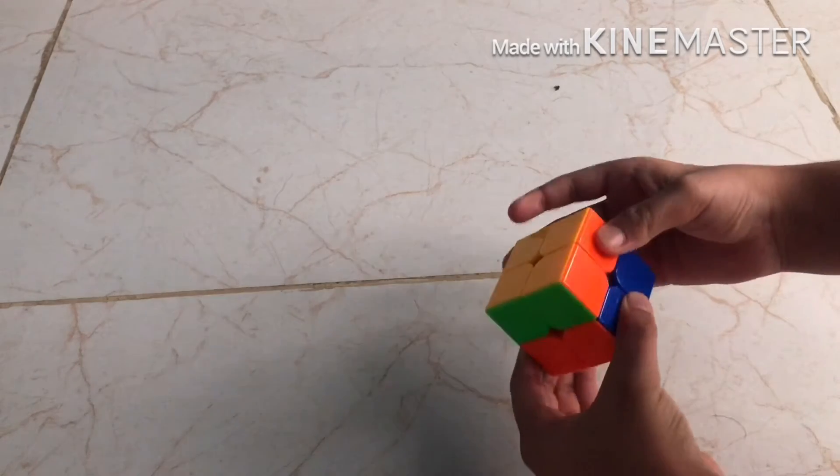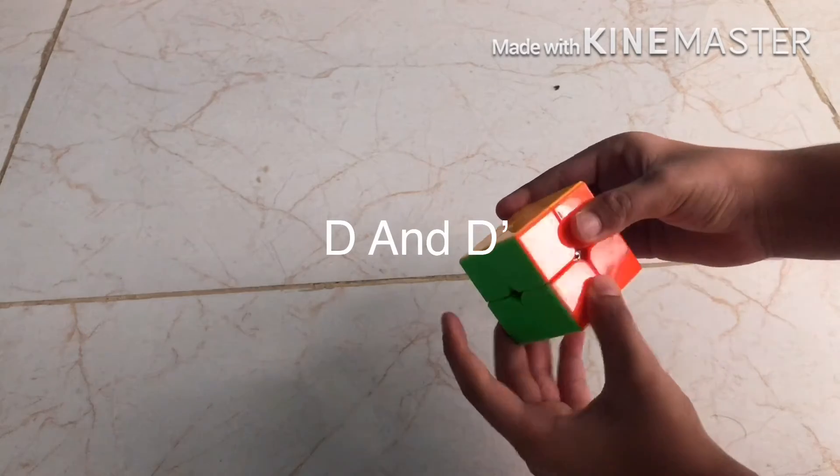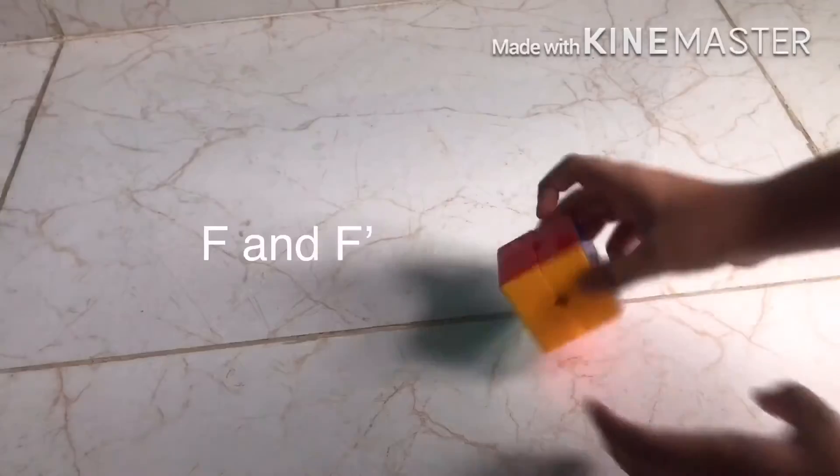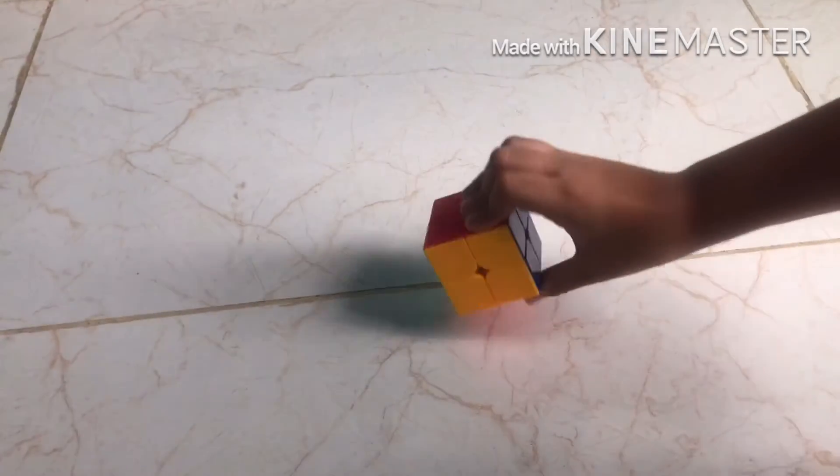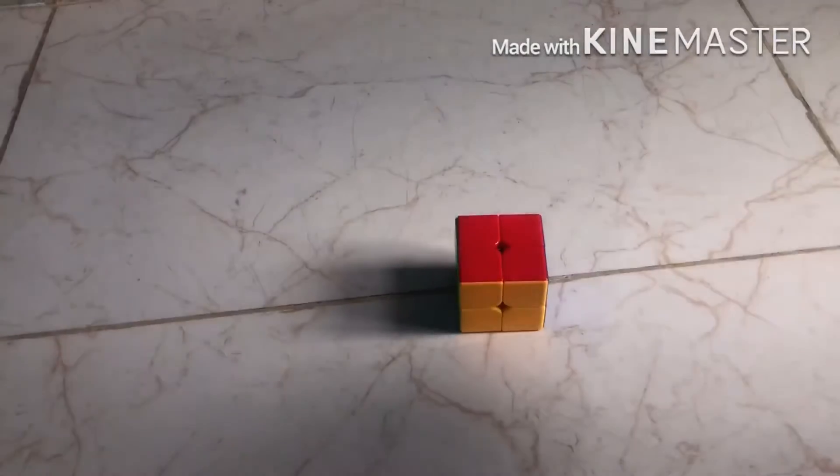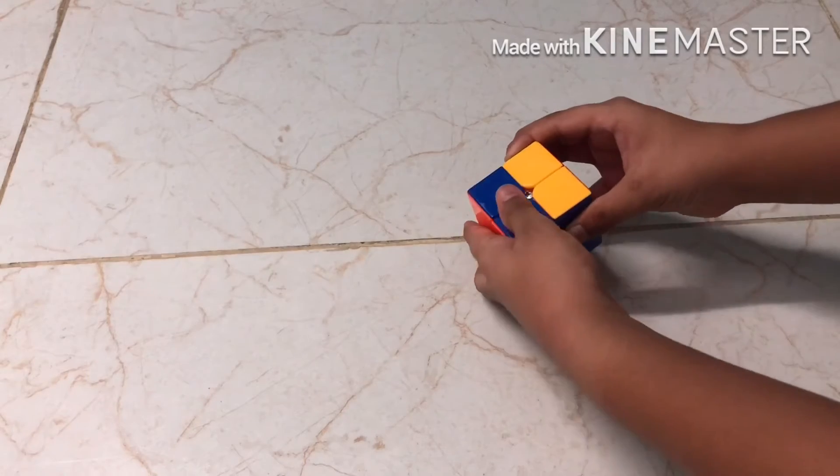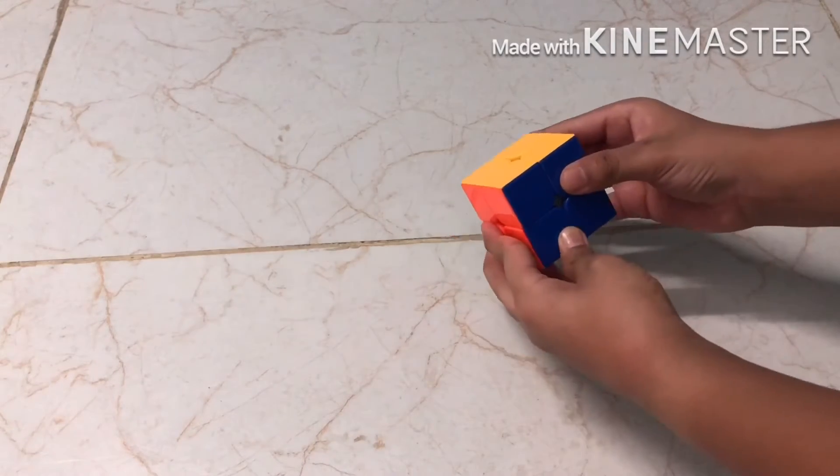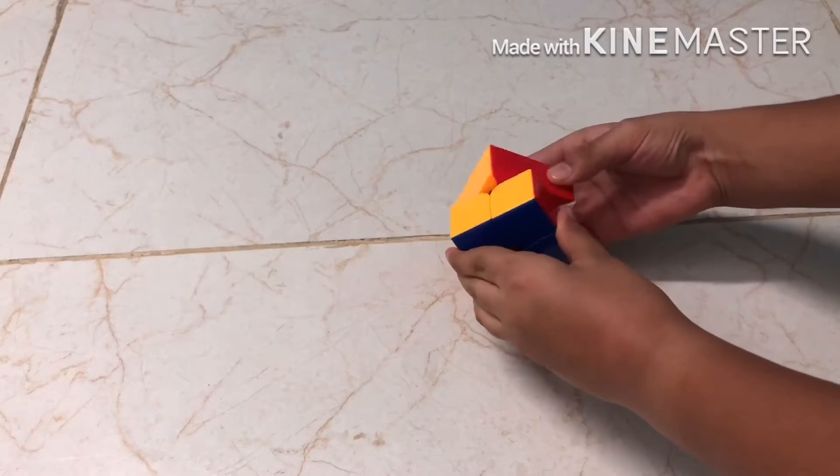And now is D. Down. D, D apostrophe. This is F. This is F and this is F apostrophe. F is forward. L apostrophe and L. L is left, remember. And B, B apostrophe.